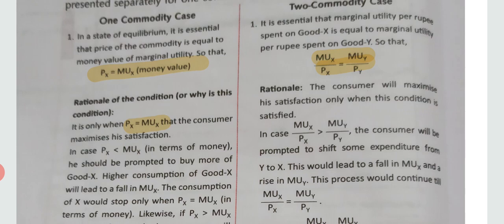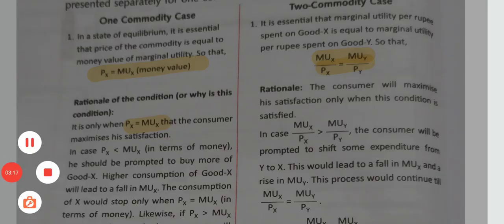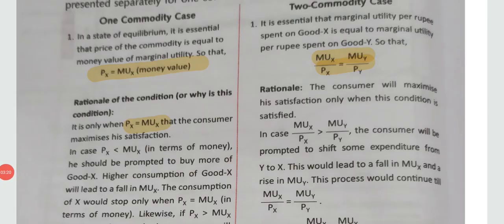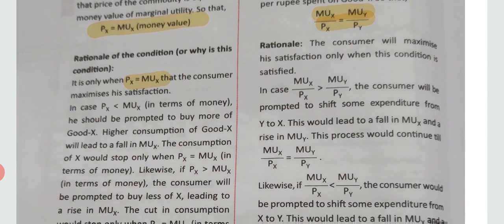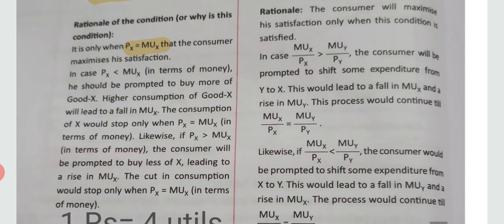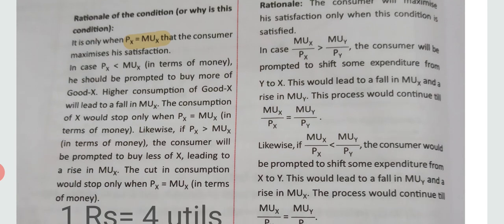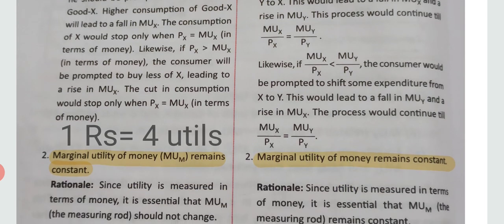In the case of one commodity, the first condition is that the price of the commodity should equal its marginal utility for the consumer to be in equilibrium. If the price is more than the marginal utility, the consumer will reduce purchases. If the price is less than the marginal utility, the consumer will buy more — but equilibrium is only reached when price equals marginal utility.